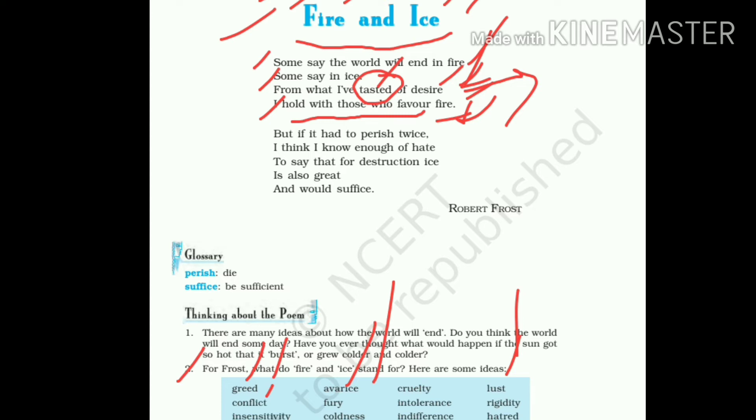Next, read it. But if it had to perish twice. Now, the poet says, but it means again this world. So the poet says, but if this world will end two times. It seems a little strange to read it, but poetry is imagination. So here the poet is just presenting his imagination, if this world will end two times. Perish means die, destruction.